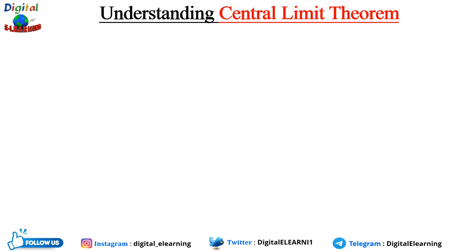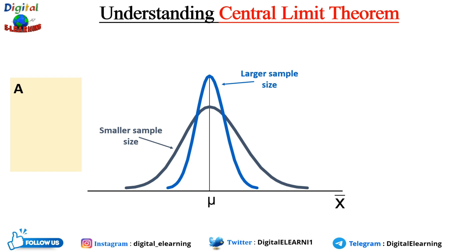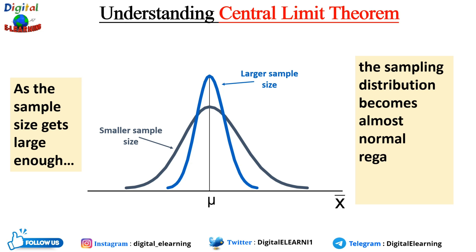If you take a graph with a smaller sample size and go on increasing to a larger sample size, as the sample size gets large enough, the sampling distribution becomes almost normal regardless of the shape of the population. That is how it can be explained graphically.